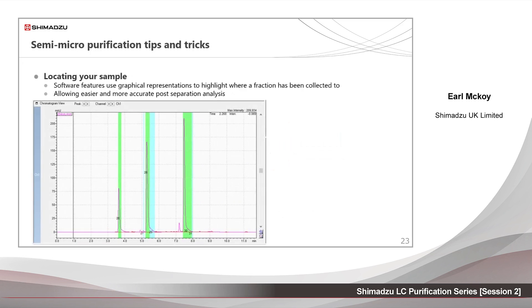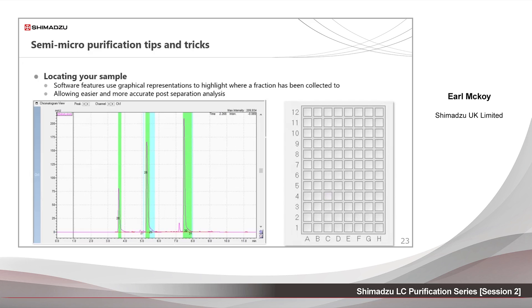Coloured bands on the chromatogram denote which peaks have been collected and where they are located. They will also show a number defining the peak's exact position in the collection map.